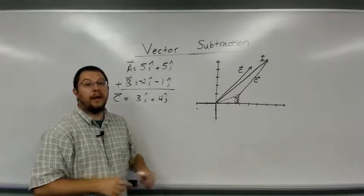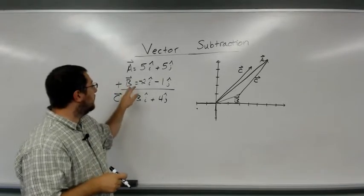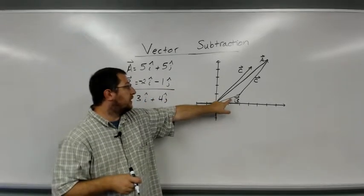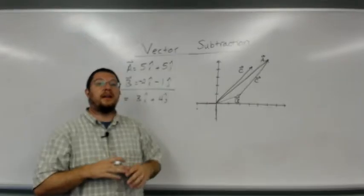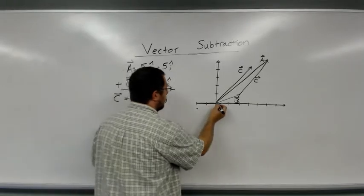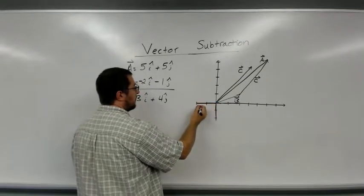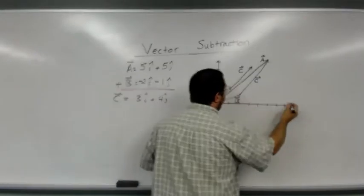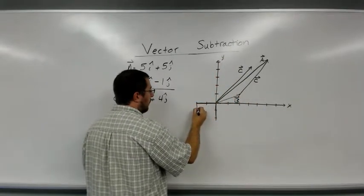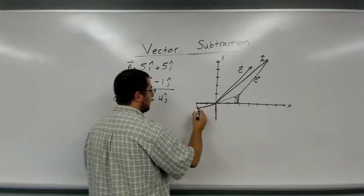Or another way that we can arrive at this is since b is what we're subtracting from and we multiply it through by a negative sign, draw the vector that is opposite from b. In other words, we changed its components to negatives. So I'm going to take 2 in the negative x direction. I didn't label my axes. Whoops.